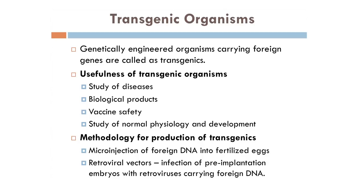The methodology for production of transgenics: we can use microinjection of the recombinant DNA into the fertilized eggs, or retroviral vectors can be used — using a retrovirus carrying the recombinant DNA which is injected into the embryo before it is implanted.